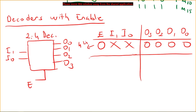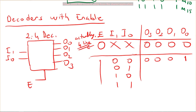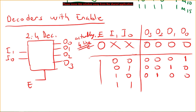When enable is one, the inputs matter. If inputs are zero-zero, output zero is selected. If inputs are zero-one, output one is selected. If inputs are one-zero, output two is selected. If inputs are one-one, output three is selected. This is the full functionality table for the decoder with enable.